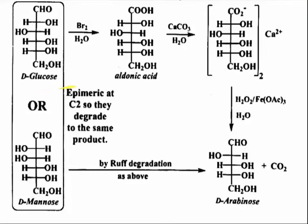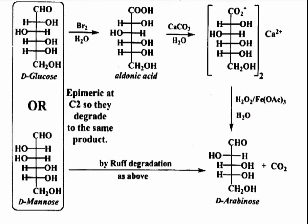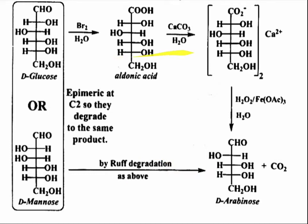This is the structure of D-glucose. Treat it with bromine water and you will get the aldonic acid. This aldonic acid is then converted to a calcium salt by treating with calcium carbonate. After this, treat it with H₂O₂ and Fe₂(SO₄)₃ and you will get the aldose. In the case of Ruff degradation, you can use both this way — the one which Ruff originally used and this modified one.